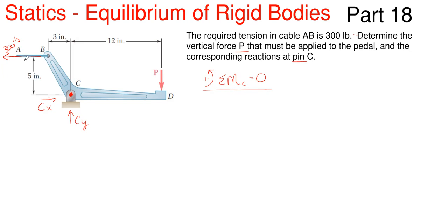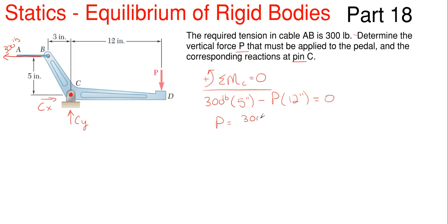Starting with the 300 pounds — it is rotating counterclockwise about point C, so it's positive 300 pounds times its perpendicular distance to joint C, which is 5 inches. Then the P force at D will be rotating clockwise about joint C, so that's minus P times its perpendicular distance of 12 inches. My reactions go right through that joint so they have no moment about that point. So P equals 300 times 5 divided by 12, which gives us 125 pounds. Since it came out positive, the downward direction is correct.